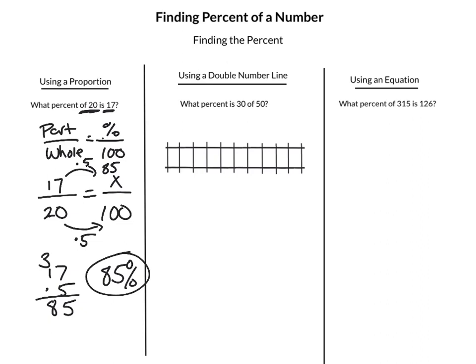Next, we're going to use a double number line again. What percent is 30 of 50? This bottom line, we're going to do percentages. We're going to start with 0% and go up to 100%. The whole is 50. That's what I'm going to put lined up with 100%. I'm going to line up a 0 with the 0%. In order to get to 30, and also be able to divide 100 evenly, we are going to divide both of these into 10 pieces. So we're going to have 10%, 20%, 30%, 40%, 50%, 60%, 70%, 80%, 90%, and 100%.